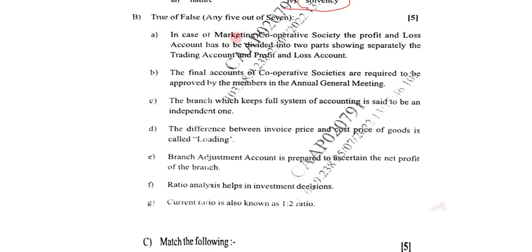First: In case of marketing cooperative society, the profit and loss account has to be divided into two parts showing separately the trading account and profit and loss account. Marketing cooperative society is also called consumer cooperative society. In this case the profit and loss account is divided into two parts. Hence this statement is true.